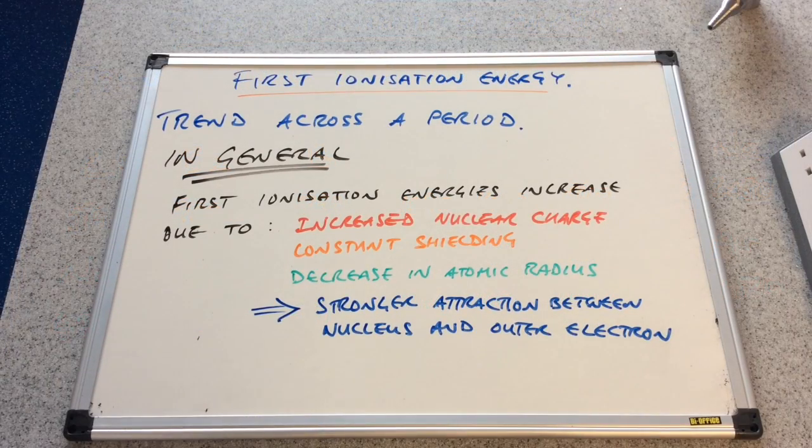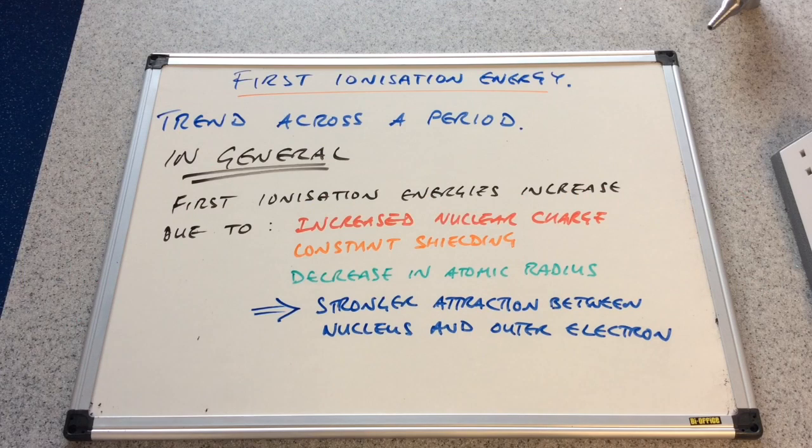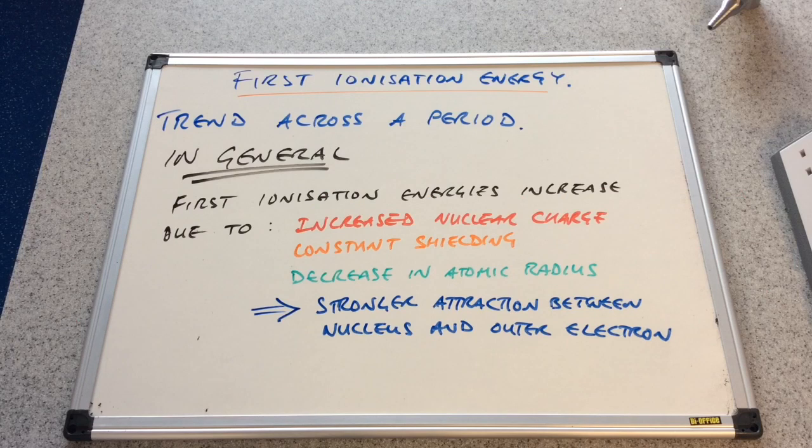We'll just summarise with this slide. The trend across a period, in general, first ionisation energies increase because of the increased nuclear charge going from left to right. Constant shielding means a drop in the atomic radius. And therefore the attraction between the outermost electron and the nucleus gets stronger and the ionisation energy increases, becomes more endothermic.